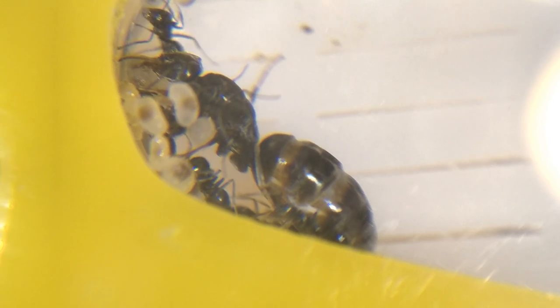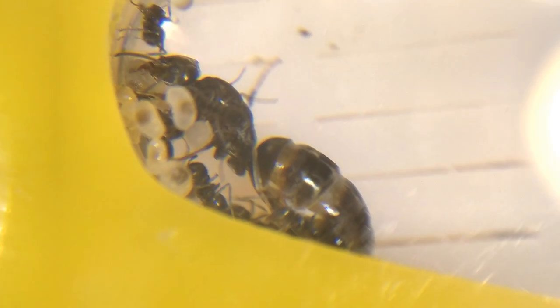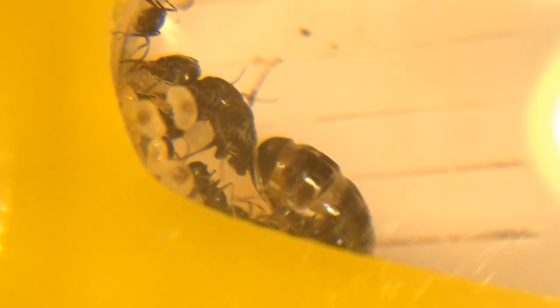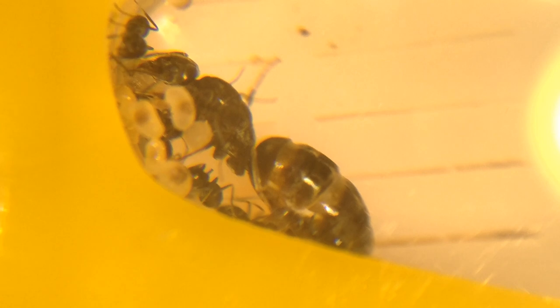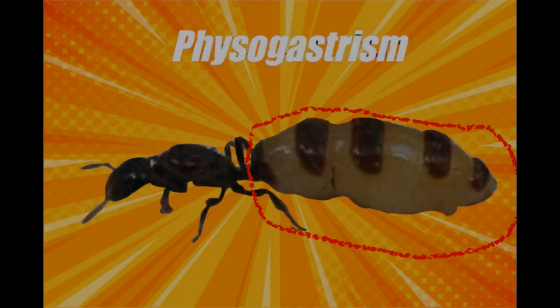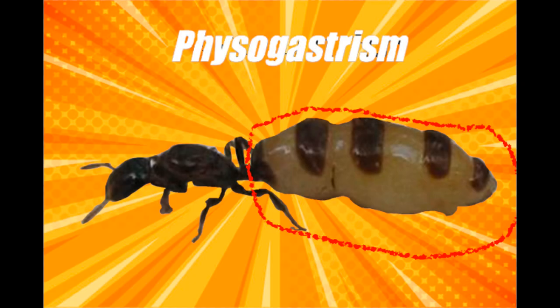Why do they become physogastric? From what I've found, when a colony finds more than enough food to feed the queen and her existing brood, she can afford to produce more eggs that consume the leftover food. That also expands the colony faster.